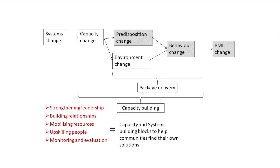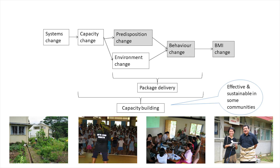By shifting the focus of the intervention a little deeper we get the community capacity building approach, which means the actual intervention effort is on strengthening leadership, building relationships, mobilizing resources, upskilling people, and doing the monitoring and evaluation. These are the capacity building blocks which support the community to find its own solutions. This approach seems to be very successful for reducing childhood obesity in some communities, but for those who need it the most, such as Pacific communities, three years of this community capacity building approach was not enough to reduce adolescent obesity.